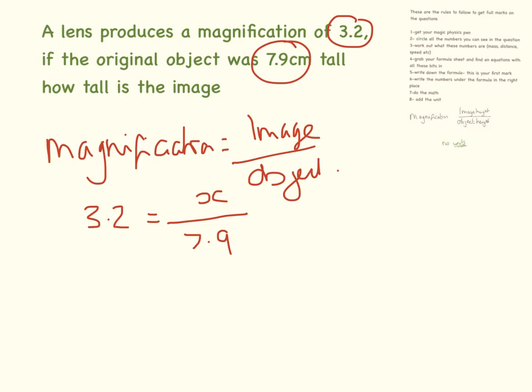So the way we need to do that is we need to move this up here. So that's 3.2 times 7.9 equals 25.28cm. And for this one we do need to put units on because we're talking about the height of the object.